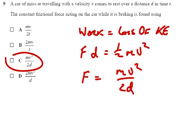Car mass M travelling at velocity V comes to rest over distance D in time T. The constant friction force acting is one of these. Well, this is work causing a loss of kinetic energy. Force times distance equals half MV squared, so F equals MV squared over 2D, and that's answer C.